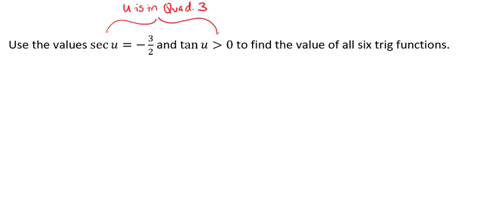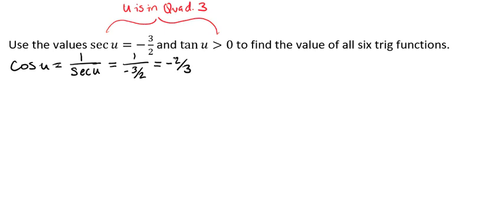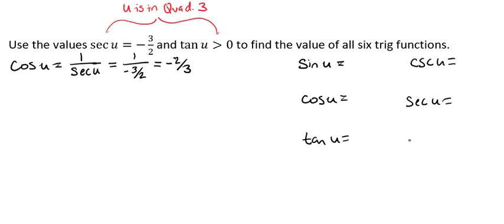We know that cosine of u is 1 over secant of u, so cosine of u equals 1 over negative 3 halves, which gives us negative 2 thirds. Let's write out all six functions we need to find: sine of u, cosine of u, tangent of u, cosecant of u, secant of u, and cotangent of u. We already have cosine, which is negative 2 thirds, and of course we already know secant is negative 3 halves.